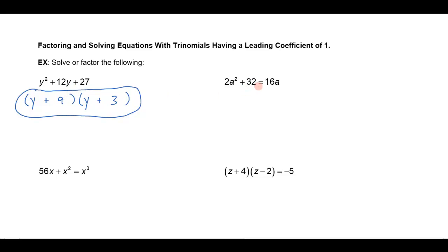Now if we move to the next example here, this is an equation. The way that we solve a trinomial equation, any polynomial equation, is to get 0 on one side. So I'm going to bring the 16a over on the left by subtracting 16a from both sides, and then I'm going to notice there's a common factor of 2.